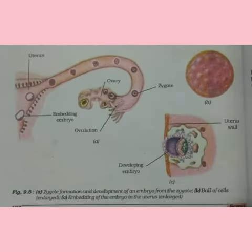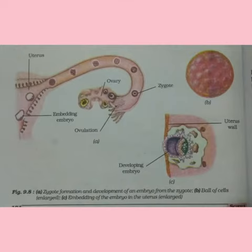As you can see in this diagram, an egg or ovum is released from any one of the ovaries. This process of release of ovum by the ovary is called ovulation. The ovum then enters the fallopian tube, commonly called oviduct.